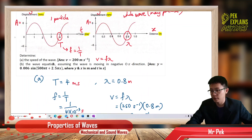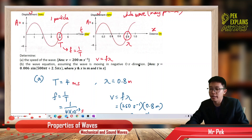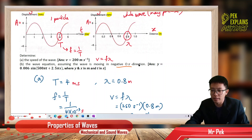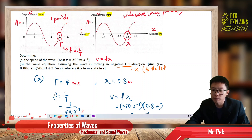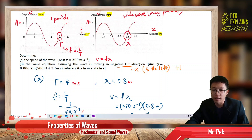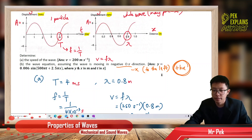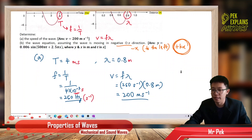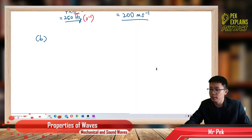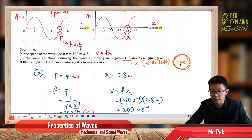The next part asks for the wave equation, assuming the wave is moving in the negative OX direction. Negative OX means negative X direction, which means to the left. The wave traveling to the left means you put positive kx in the formula. To the left is positive kx.